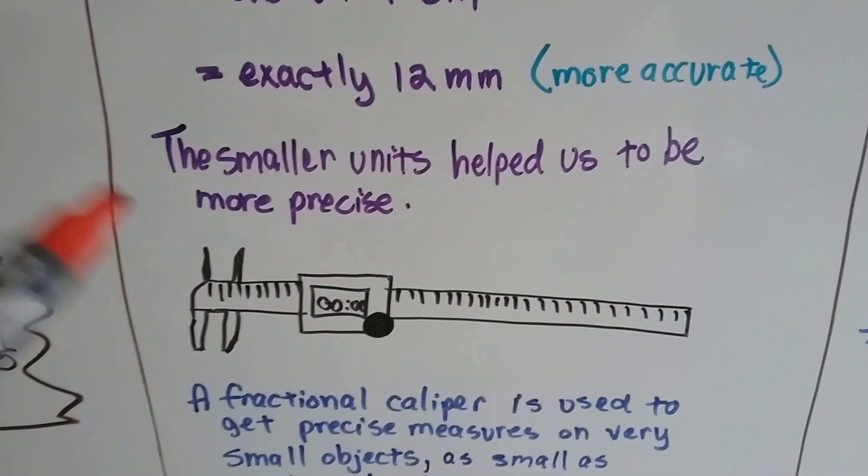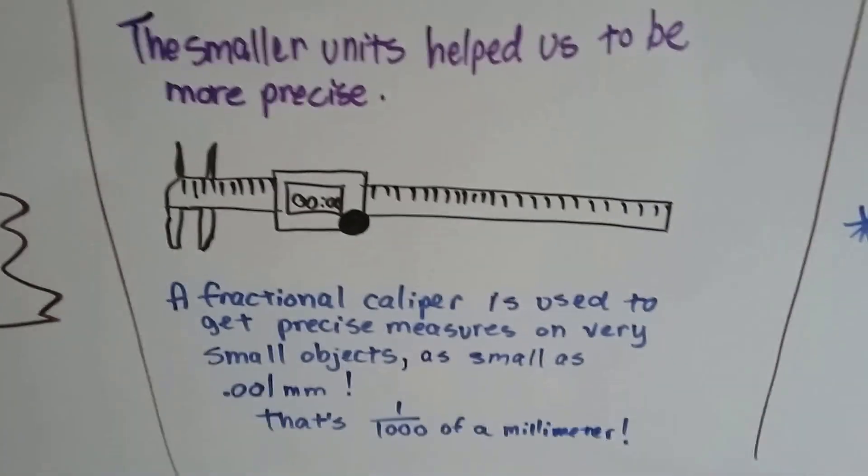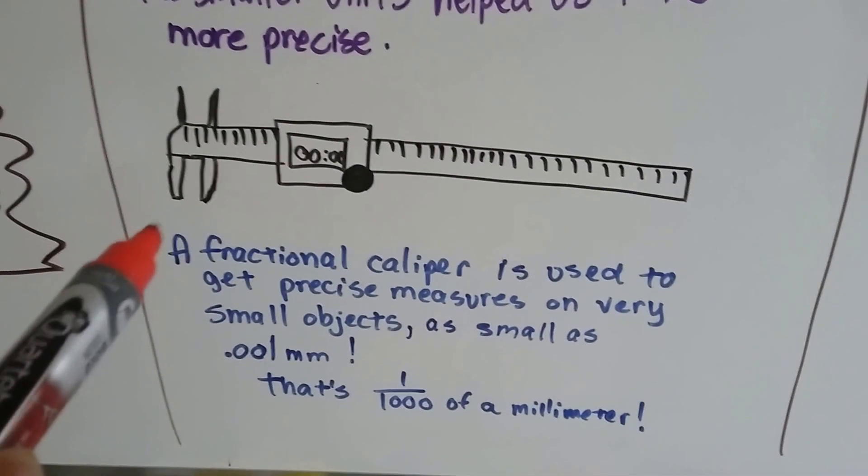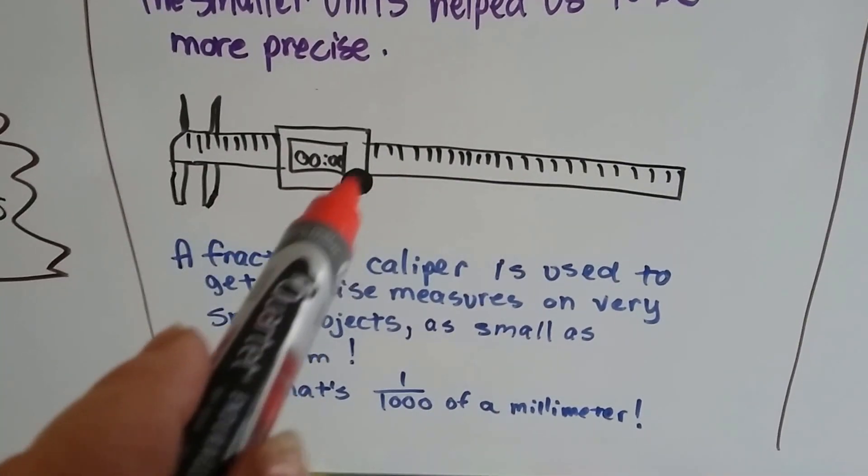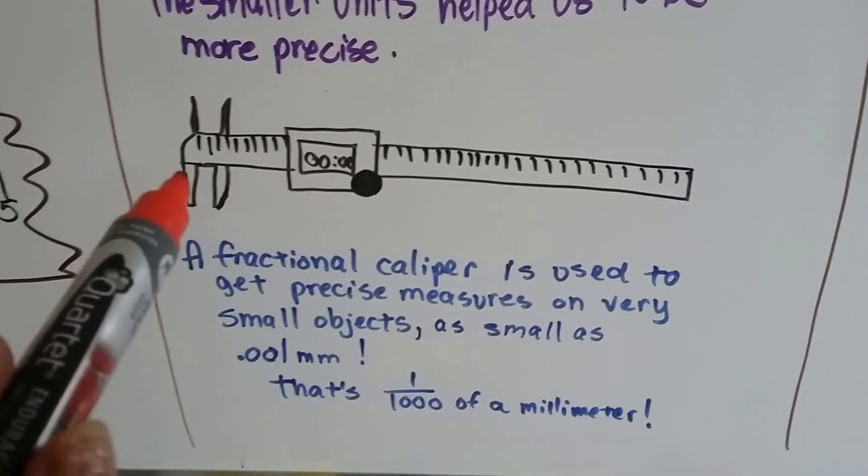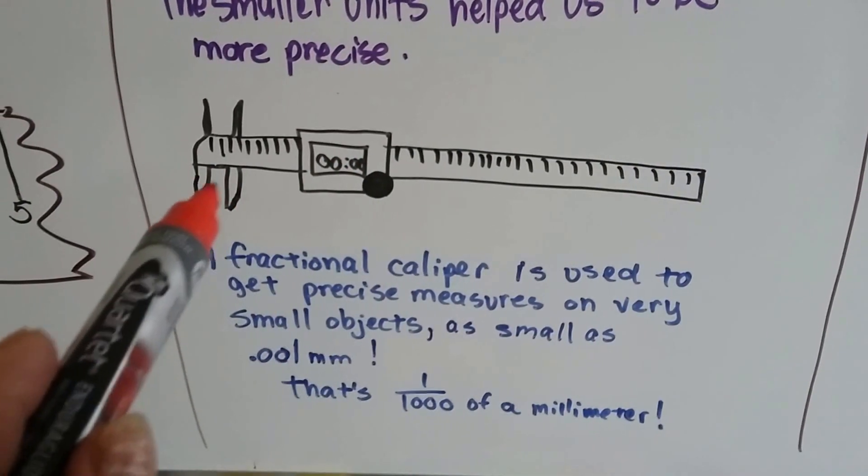The smaller units help us to be more precise. Now, engineers use a thing called a fractional caliper, and it's got a little dial. This moves and opens this mouth up.